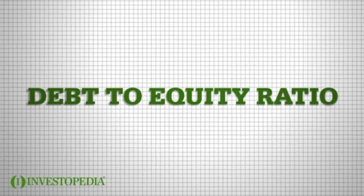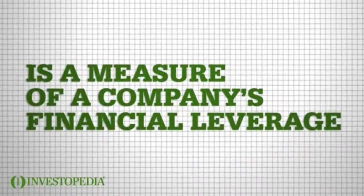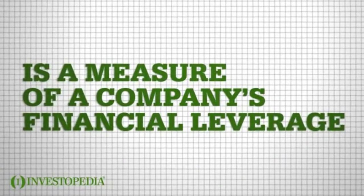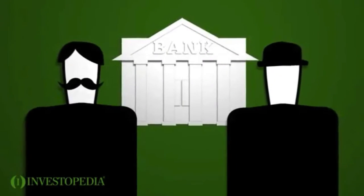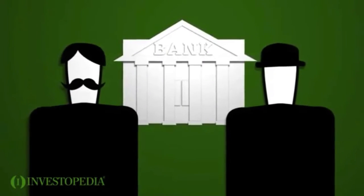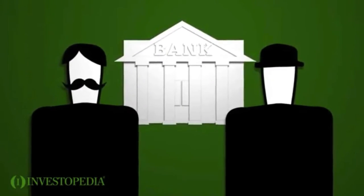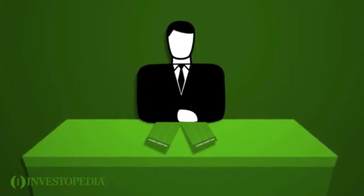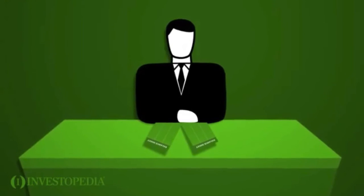The debt to equity ratio is a measure of a company's financial leverage. Al and Ed both go to the bank for business loans. The loan officer looks at their respective balance sheets.